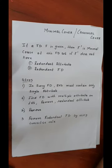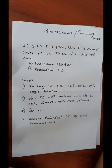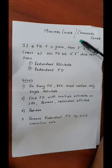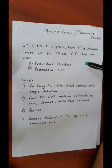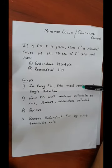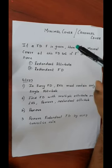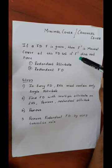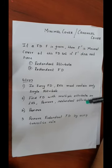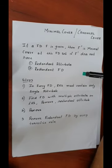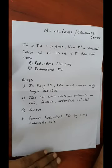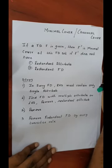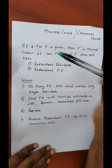The next topic is minimal cover, also known as canonical cover. Minimal cover is used to remove any redundant attributes or redundant functional dependencies from a given set of functional dependencies. Suppose we are given a set of functional dependencies — certain functional dependencies will be redundant and can be removed. After removal of those redundant functional dependencies, the leftover set is known as the minimal cover.